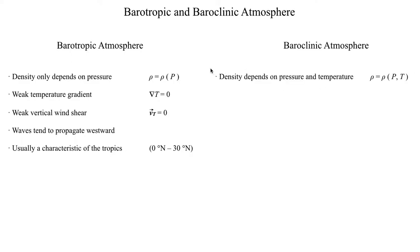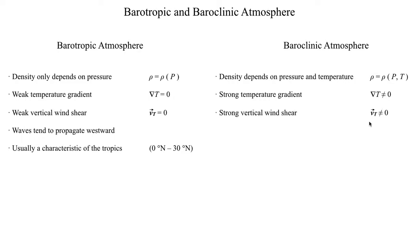A baroclinic atmosphere, in contrast, is an atmosphere where the density of the air depends on both pressure and temperature. Since we have this temperature dependency in density, this implies a horizontal temperature gradient that we have to worry about, meaning the temperature gradient is not equal to zero. From the thermal wind relationship, if you have a strong temperature gradient, then you have a strong thermal wind vector, and that in turn means you have strong vertical wind shear present in the atmosphere.